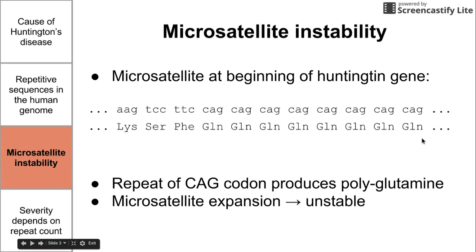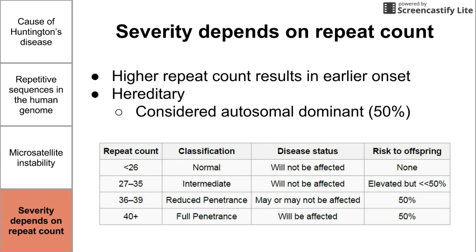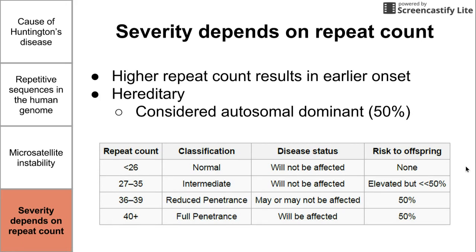This slide shows how the severity of the disease depends on the amount of repeats. If you have fewer than 26 repeats, you are considered normal — you will not be affected and should show no increased risk, and your offspring does not have an increased risk of having Huntington's disease. As the repeat count increases, you are at intermediate risk and have a better chance of passing it on to your offspring.